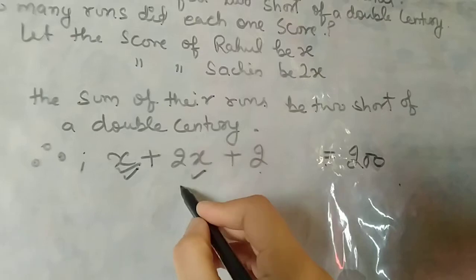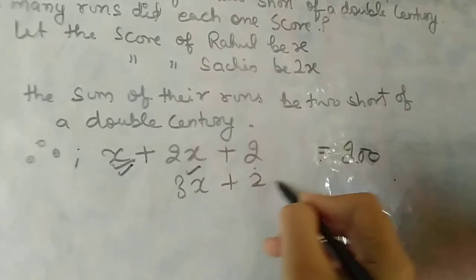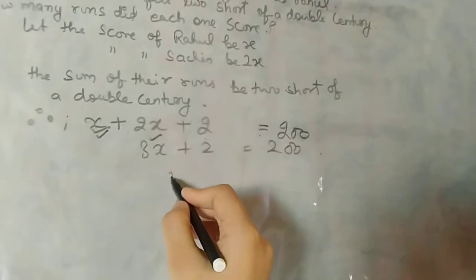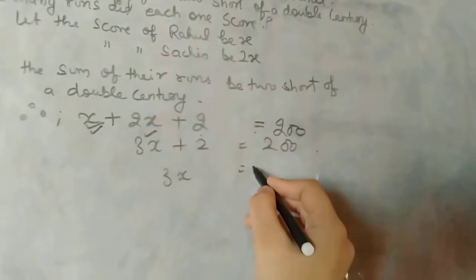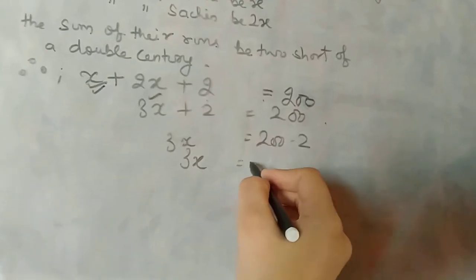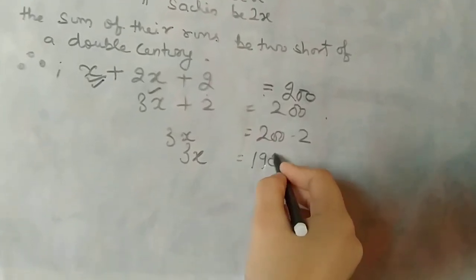Adding these: 1x plus 2x gives 3x plus 2 equals 200. So 3x equals 200 minus 2. Subtracting 2 from 200 gives you 198.